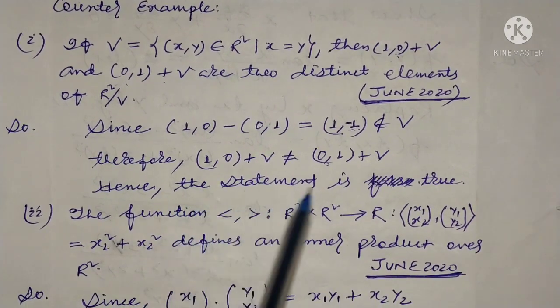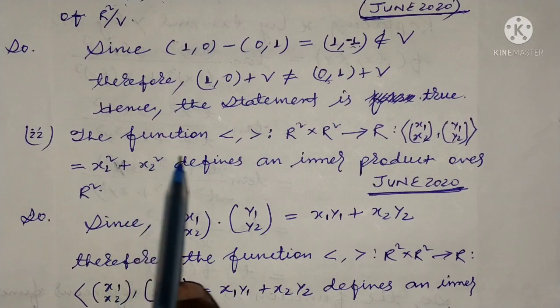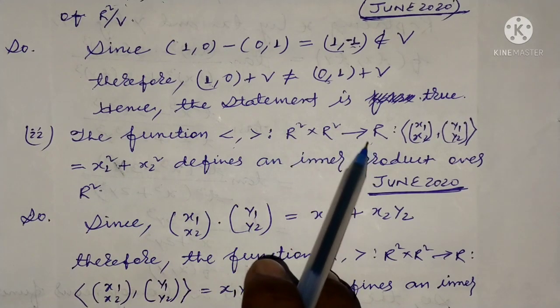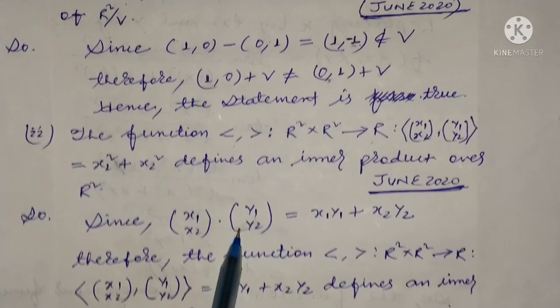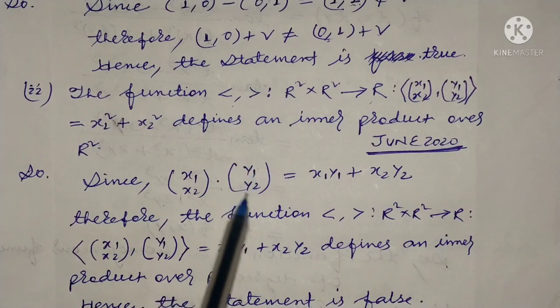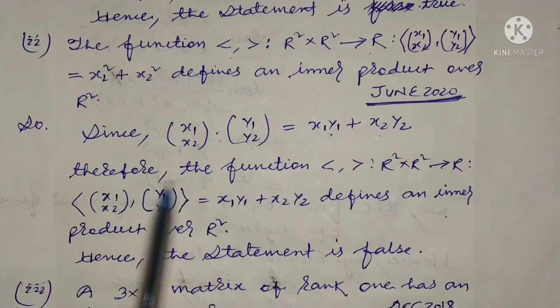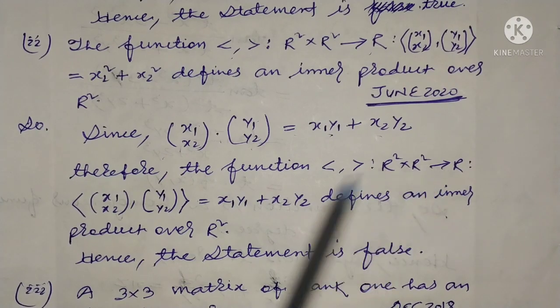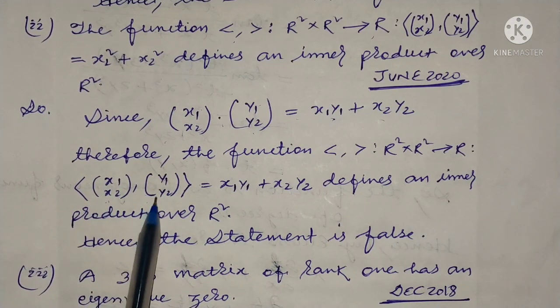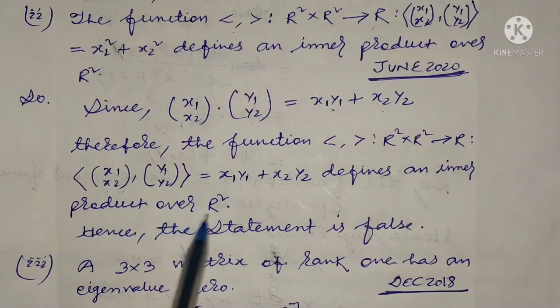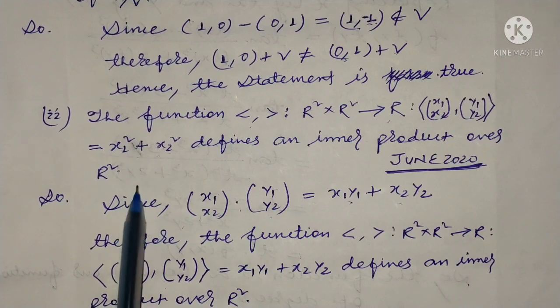The function <·,·>: R² × R² → R: ((x₁,x₂),(y₁,y₂)) = x₁y₁ + x₂y₂ defines an inner product over R². Since (x₁,x₂)·(y₁,y₂) equals x₁y₁ + x₂y₂, therefore the function defines an inner product over R². Hence the statement is false, because what should be x₁y₁ + x₂y₂.